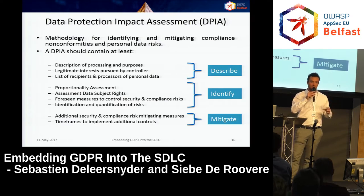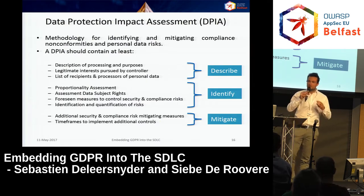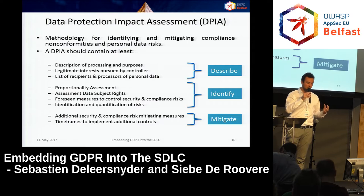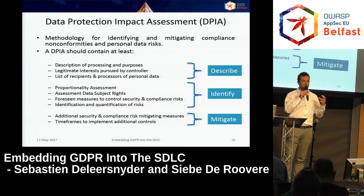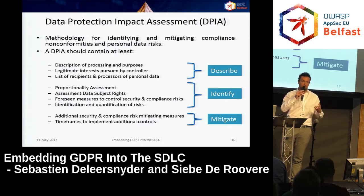Second, identify the risks. It starts with a proportionality assessment — identify which data you use and ask: do I really need all this data, or can I build the same application with less data? Assess data subject rights: can data be rectified, can it be forgotten? Identify information security risks, and if they're too high take measures to mitigate them. Third, describe the mitigation and define your residual risks. If the residual risk is low, you can go ahead and build the application. If the residual risk remains high, you need to contact the National Data Protection Authority to ask if it's acceptable or if the project needs to be stopped.